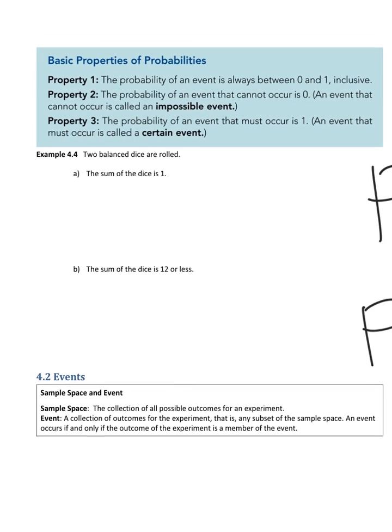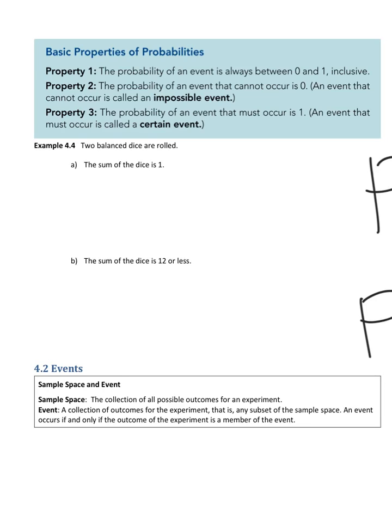Now we have some properties for probabilities. The very first one: any probability for any event must be between zero and one — never negative, never bigger than one. Be careful, this is the most important property for probability. In the case of zero, sometimes we can have a probability of zero, and we say it is an impossible event.